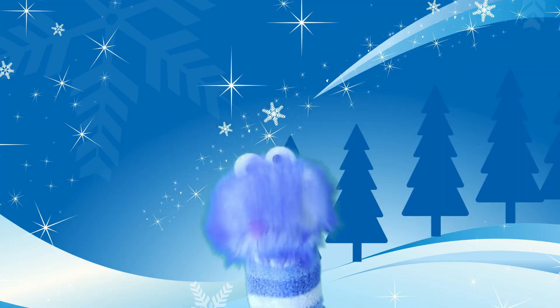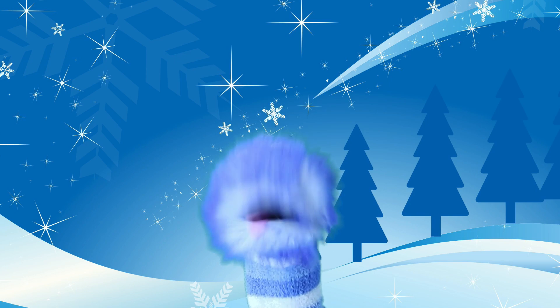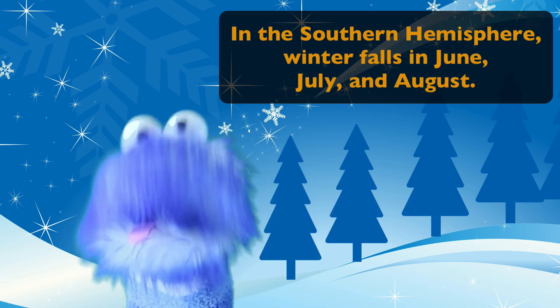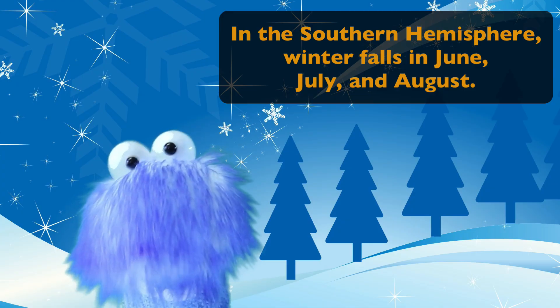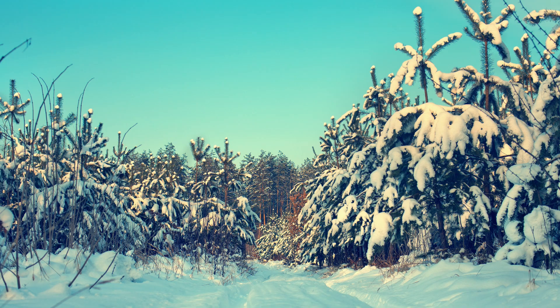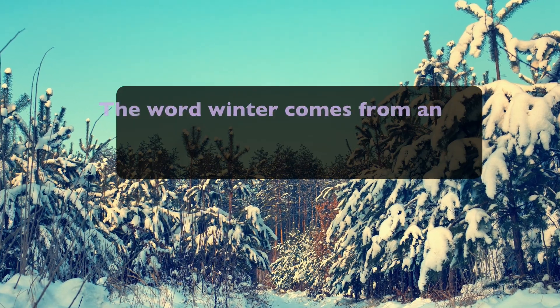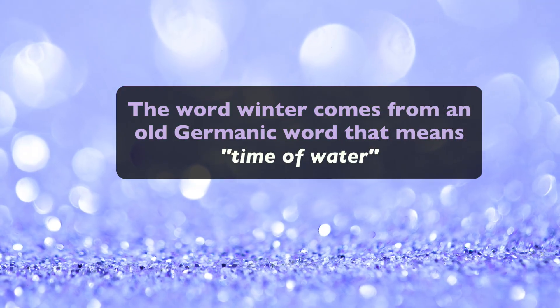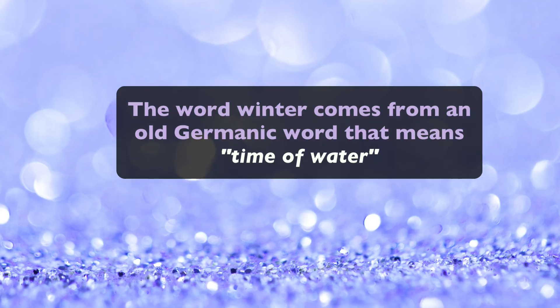In the northern hemisphere, winter starts at the end of December and goes through the end of March. But in the southern hemisphere, winter happens in June, July, and August. And the word winter comes from an old Germanic word that means time of water.